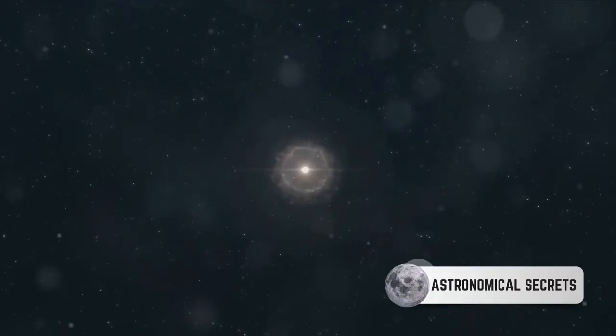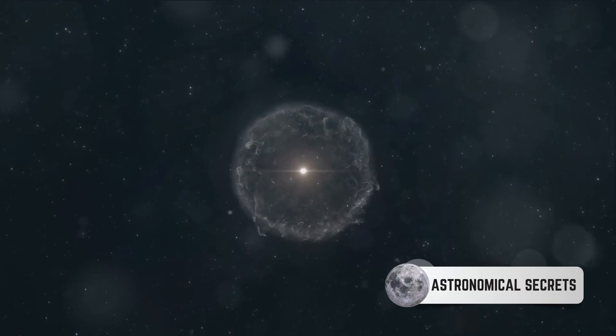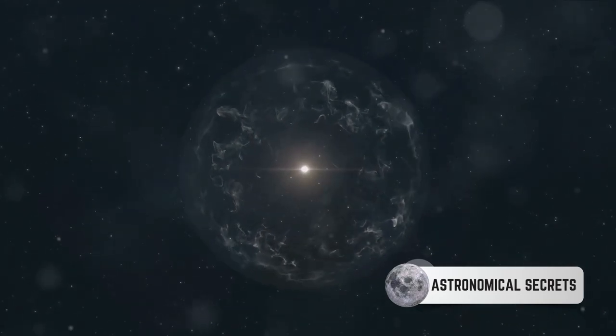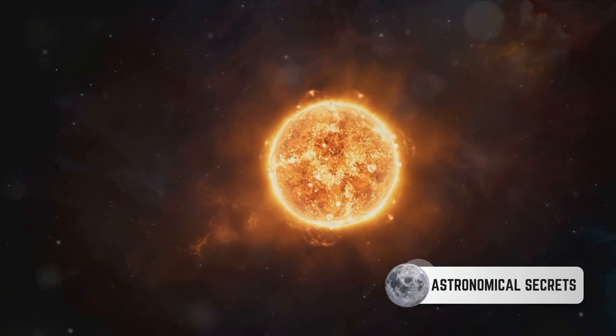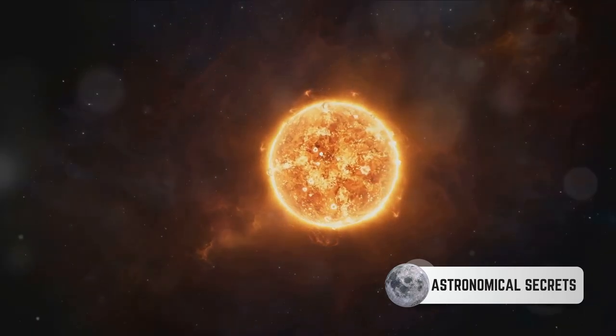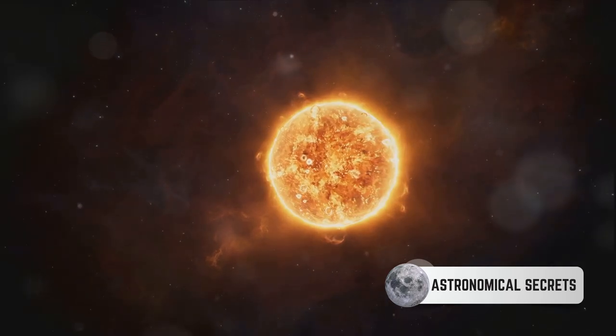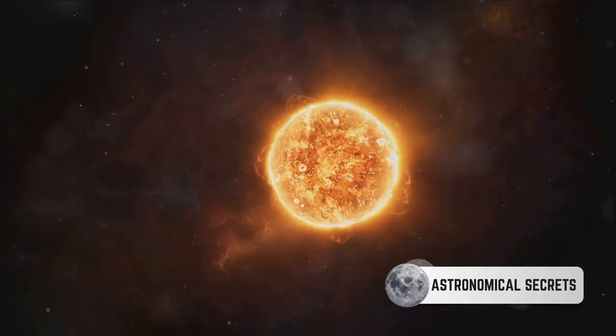Our sun, a perfect example of a low-mass star, was born this way from a dense cloud of cosmic dust and gas. It's a fascinating process that takes millions of years. Yet, it's happening all around us in every corner of the universe. Each star you see in the night sky has its own story of birth, life, and eventual death.